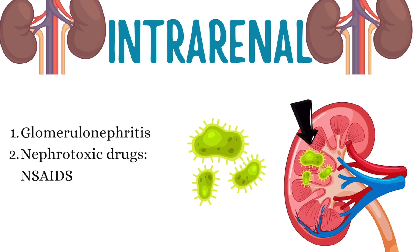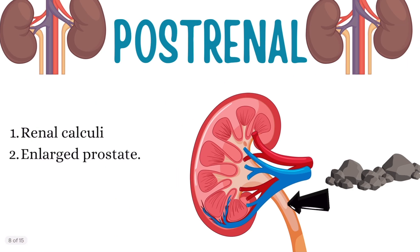Number two is intra-renal injury. This means that there is an injury within the kidneys, due to damage to the nephrons. For example, glomerulonephritis can cause injury within the kidneys, as can nephrotoxic drugs such as NSAIDs. Number three is post-renal injury — this is when there is injury after the kidneys. A blockage in the urinary tract after the kidneys causes that post-renal injury. Examples include renal calculi or kidney stones, and an enlarged prostate.